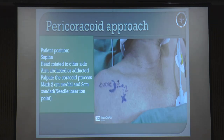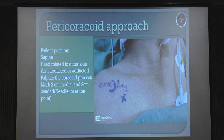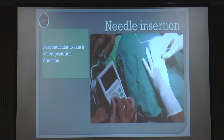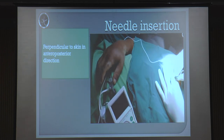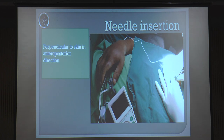Paracoracoid approach: patient supine, head rotated towards one side, arms can be abducted or adducted. That's the advantage of the infraclavicular approach. Palpate the coracoid process. 2 cm medial and 2 cm caudad is your needle insertion point. The needle goes in a perpendicular anterior-posterior direction. The first response you usually get is contraction of the pec muscles. As you saw yesterday, you have the pec major, pec minor, and then you have the vessels, and then you have the cords. Thanks to the schedule being prepared nicely so that after yesterday's ultrasound session you can analyze the structures you crossed.